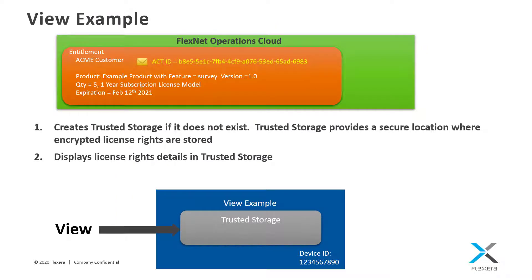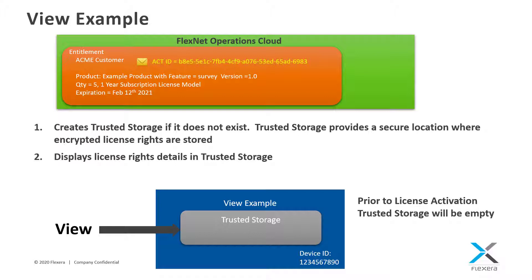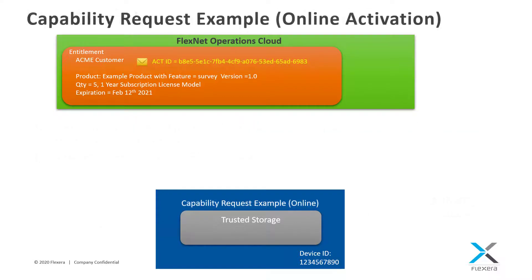The View example will display the details of the license rights in trusted storage. As you would expect, the contents of trusted storage will be empty prior to license activation. Now let's take a look at the Capability Request example. We'll be using this example to activate or obtain a license from FlexNet Operations in both online and offline scenarios.